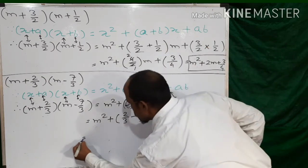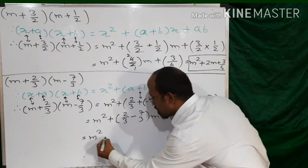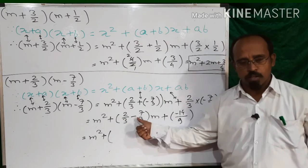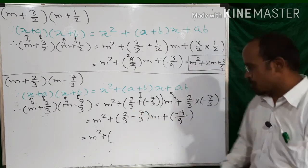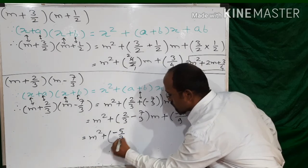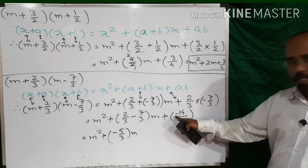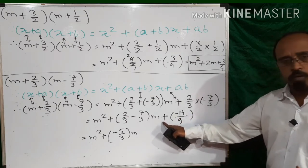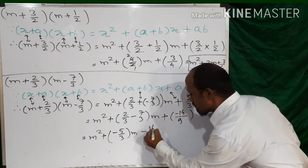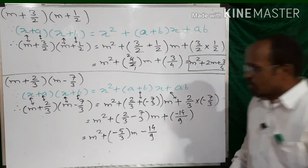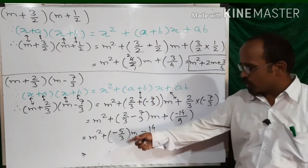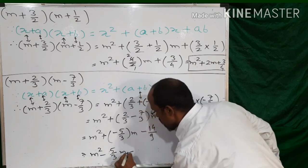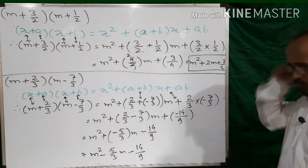Now we remove the bracket: m² plus (2/3 − 7/3)·m + (−14/9). For 2/3 − 7/3: the symbols differ, so we subtract — 7 − 2 = 5, and the symbol of the greater number is minus, giving −5/3. The bracket outside has a plus symbol, so we don't change the symbol: −14/9 stays as minus. Removing the remaining bracket: our final answer is m² − 5/3·m − 14/9.